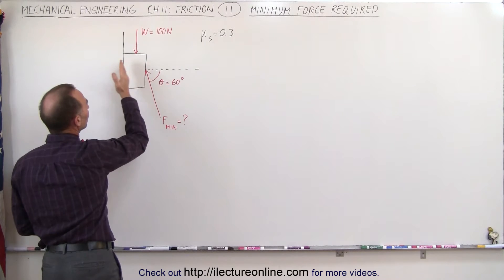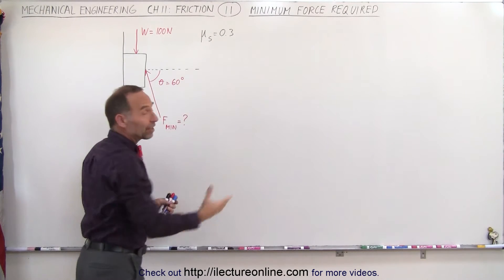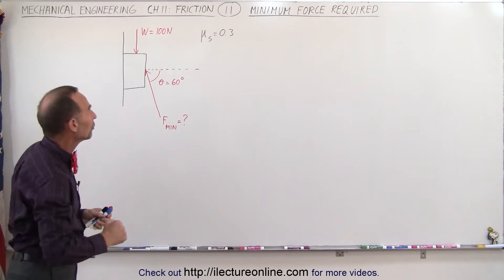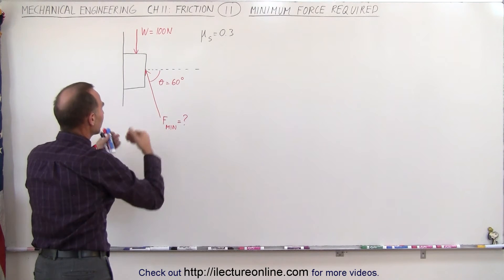The friction between the block and the wall is 0.3. We're assuming it's static friction because the block should not be moving. So what's keeping the block from coming down?